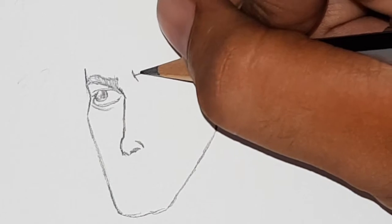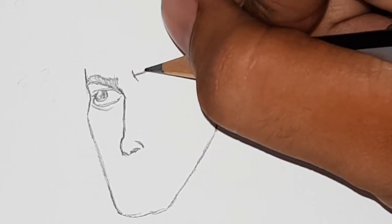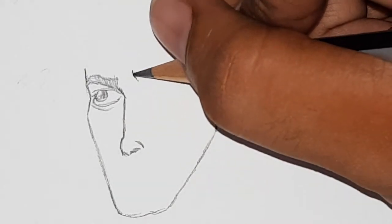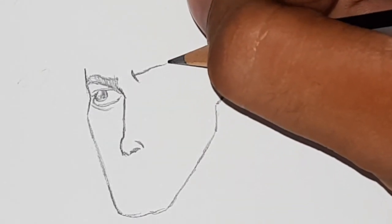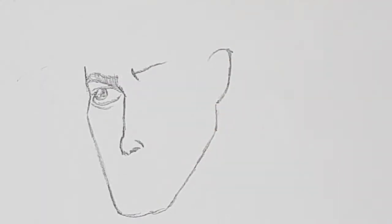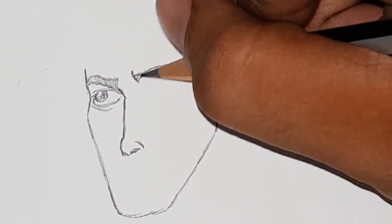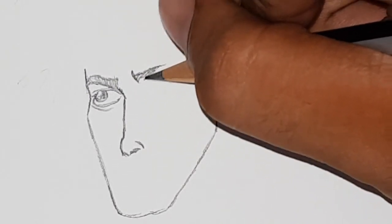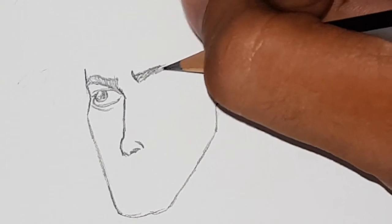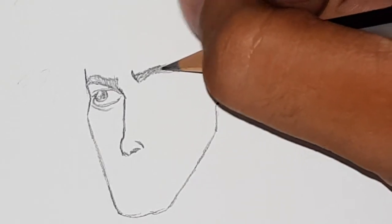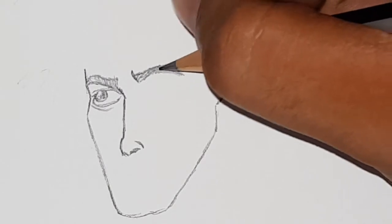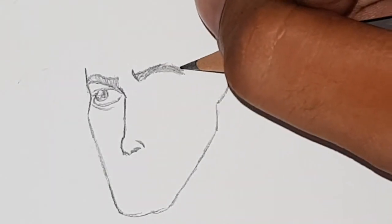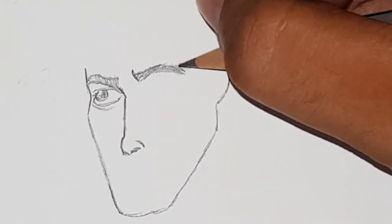Now for the second eyebrow and the eye, you're going to curve like this. This eyebrow is going to be longer than this. You can just be like... you can shade it like that, no problem. Yeah, it's going to come like that.